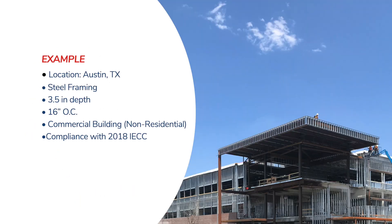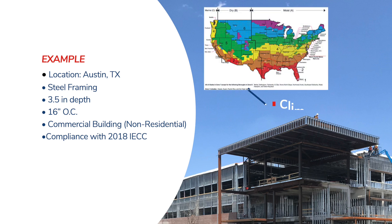Say you're designing a steel stud commercial building in Austin, Texas and are using the prescriptive approach to comply with the 2018 IECC. The first step is to determine your climate zone if not already known. Using the U.S. climate zone tables found either in the ASHRAE standard or in the energy code, you'd see that Austin is categorized under climate zone 2a.